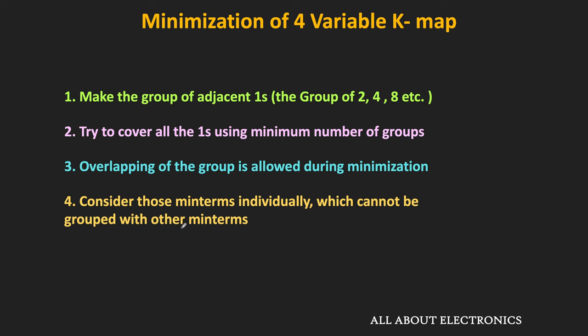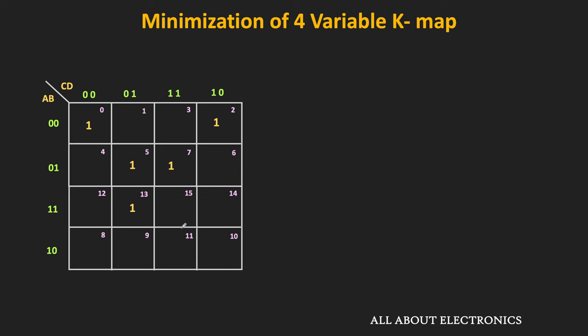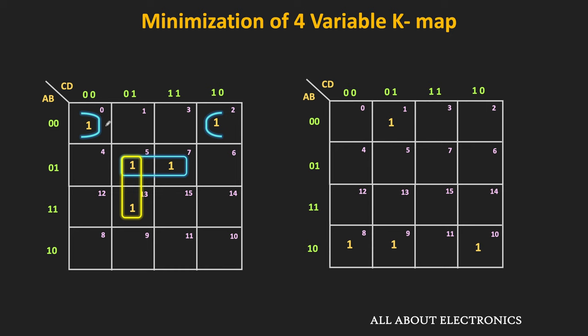In the 4-variable kmap, we can make groups of 2, 4, or 8 adjacent 1s. Let us see some possible ways to make a group of 2. We can make a group of minterms 5 and 13, or minterms 5 and 7. We have also seen that cells at the edges are adjacent, so we can combine those 2 ones. Similarly, we can make a group of 2 ones in the first and last columns, and also in the first and last rows. These are some possible ways to make a group of 2.